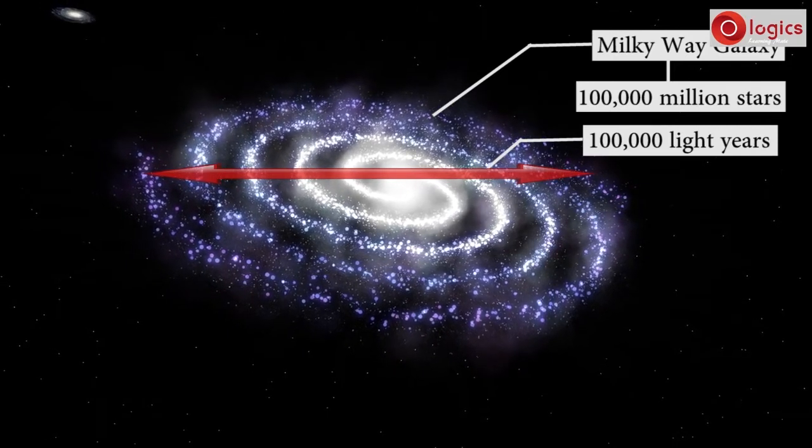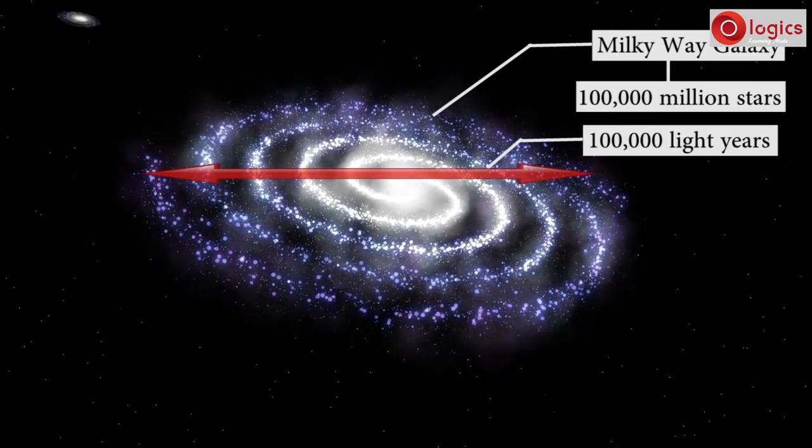Just imagine our sun is one star. Just like sun, one lakh million stars are there in one galaxy. You know diameter of the sun and earth and other planets measured in kilometers. The diameter of our galaxy, the Milky Way, is one lakh light years.